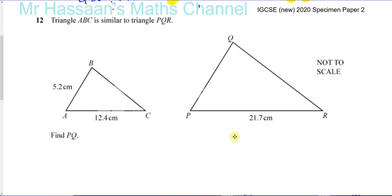Now for question number 12, which is a question about similar triangles. It says triangle ABC is similar to triangle PQR. Find PQ.